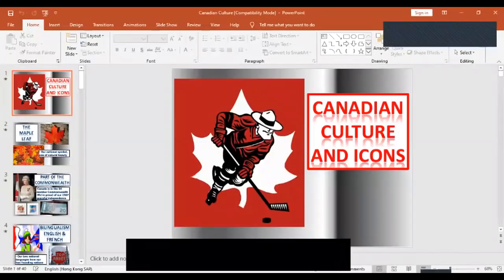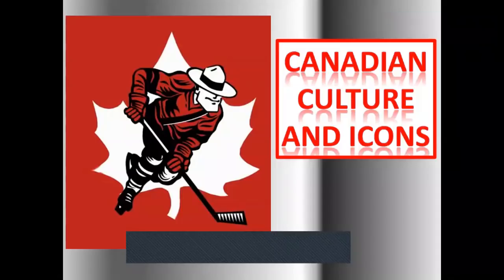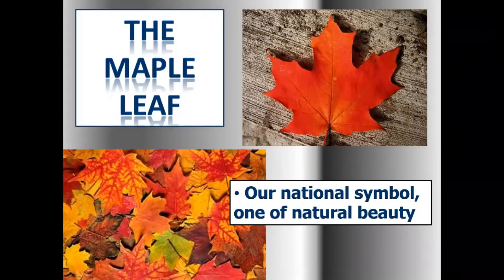Daniel, do you know anything about Canada? I actually know quite a lot about Canada. Very good, so I hope you can help teach the lesson. We are going to look at some Canadian culture and icons. Icons are things that would represent Canada — like a symbol. What is this, Daniel? This is the maple leaf. It is the national symbol and one of the natural beauties of Canada. If you look at the Canadian flag, you will notice that it has a maple leaf at the centre because it symbolizes the environment. So the maple leaf is our national symbol on our flag.